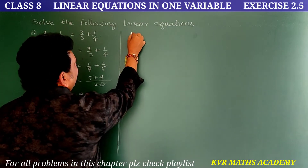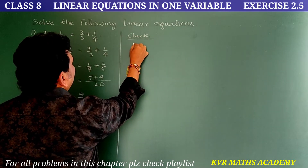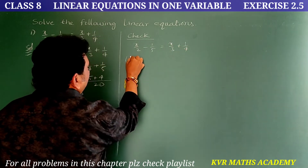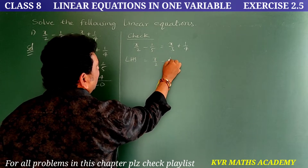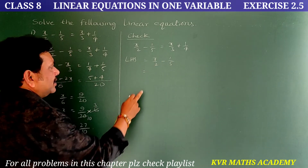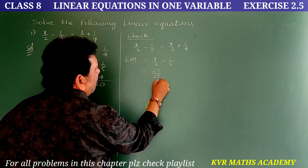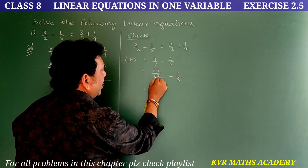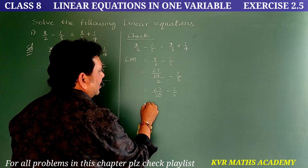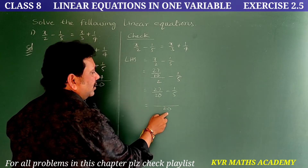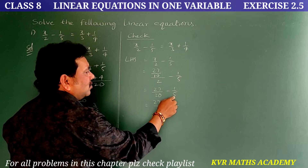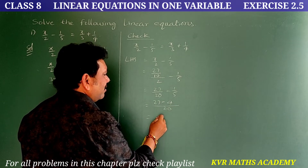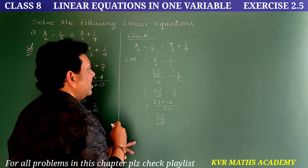Now let us check whether the answer is correct. Given equation: x/2 - 1/5 = x/3 + 1/4. Take LHS = x/2 - 1/5. Substituting x = 27/10: that is 27/10 ÷ 2 - 1/5 = 27/20 - 1/5. LCM is 20: 1 × 27 = 27, minus 4 × 1 = 4. So 27 - 4 = 23, giving LHS = 23/20.